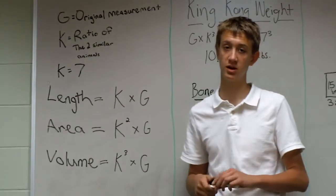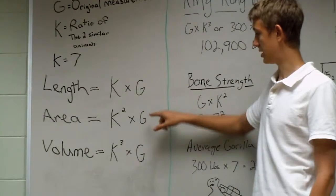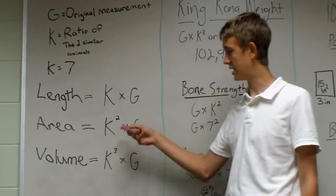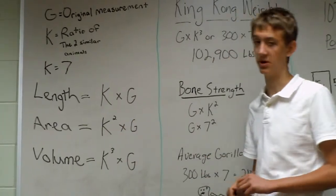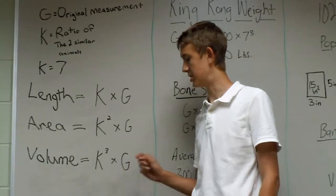In this case, King Kong and the gorilla. Length follows K times G in the one dimension. Area is two dimensions, so it's K squared multiplied by G. And volume in the third dimension is K cubed multiplied by G.